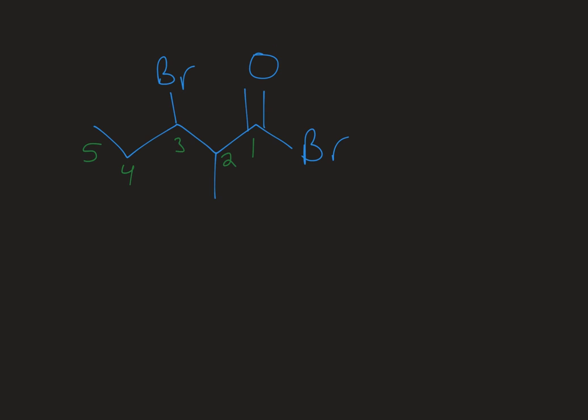And then I'd have my substituents out in front in alphabetical order. So that would be three bromo, two methyl, then I have a five carbon chain. So pentanoyl space, the word bromide.